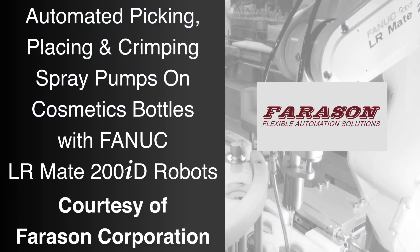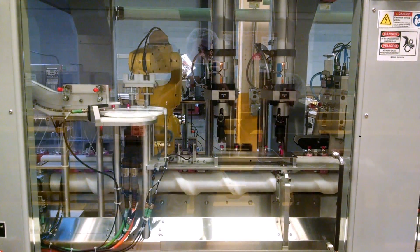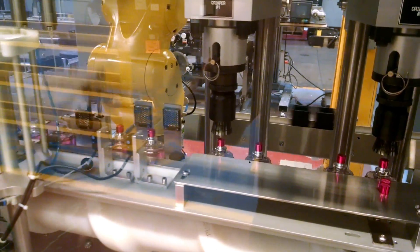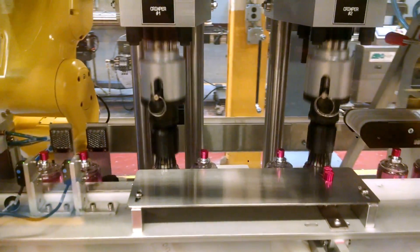FANUC America Authorized System Integrator Ferrosan Corporation developed this robotic system to pick, place, and crimp spray pumps onto cosmetics bottles at incredibly fast rates of 70 to 80 bottles per minute.